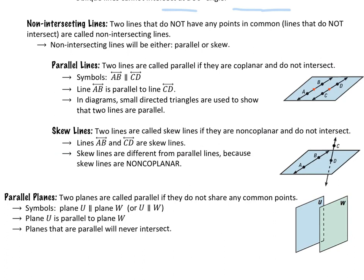Just as intersecting lines are either perpendicular or oblique, any pair of lines is either intersecting or non-intersecting. Non-intersecting lines do not have any points in common. Even if we extend these two lines out to infinite distances in either direction, those lines never intersect — they never share any point in common in three-dimensional space.